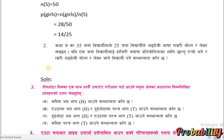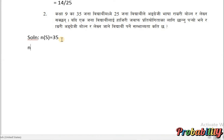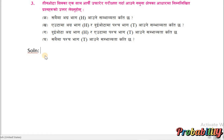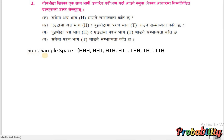Question Number 2. The sample space is 35, and the number of events — let's denote it as E — is 25. Probability of E, P(E), is equal to n(E) upon n(S), which is equal to 25 by 35. The lowest formula gives us 5 by 7.